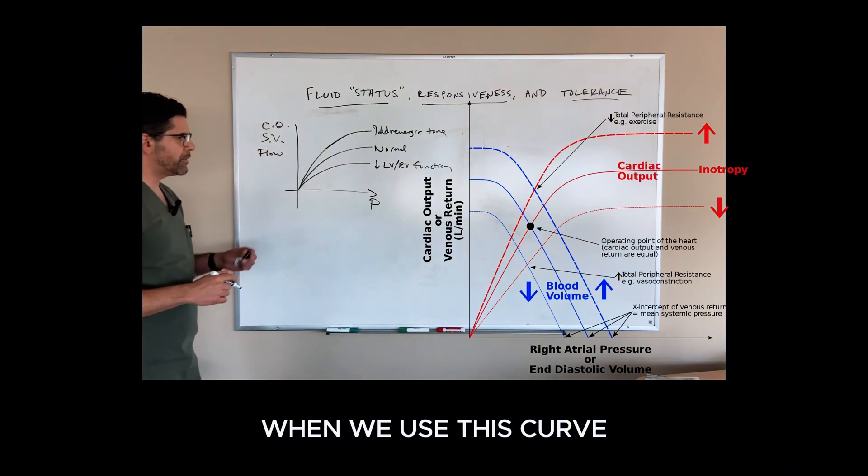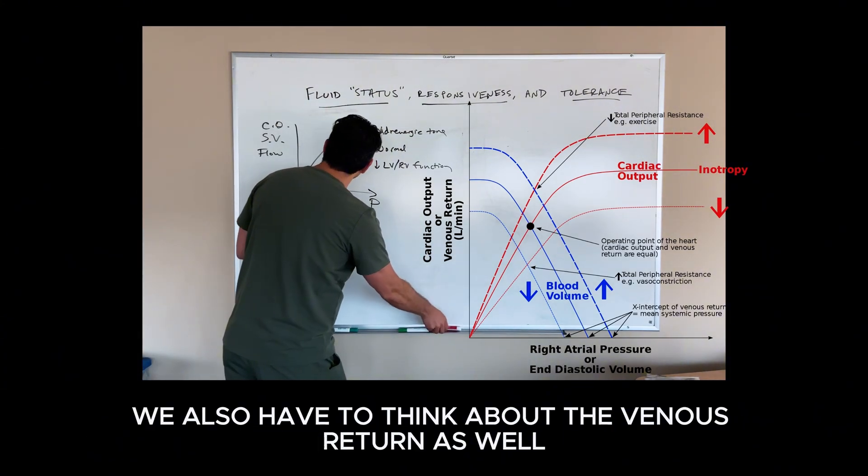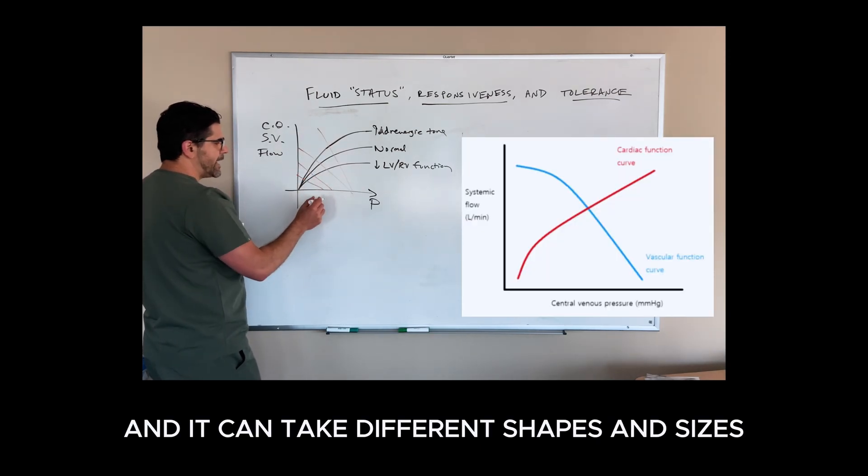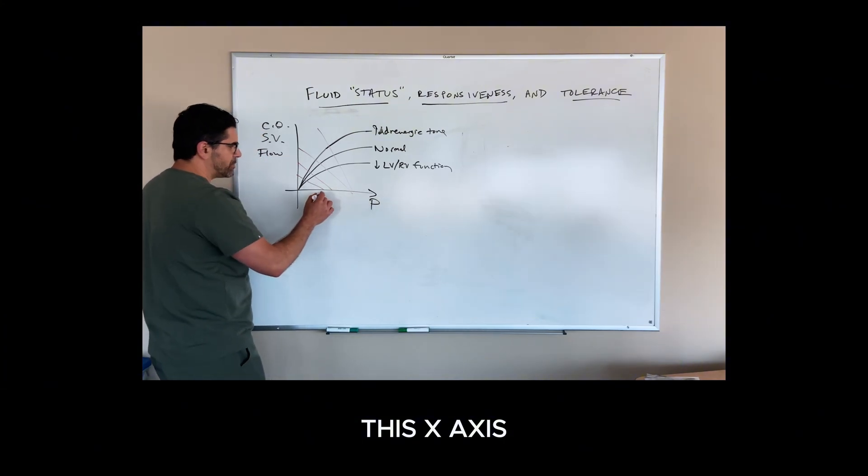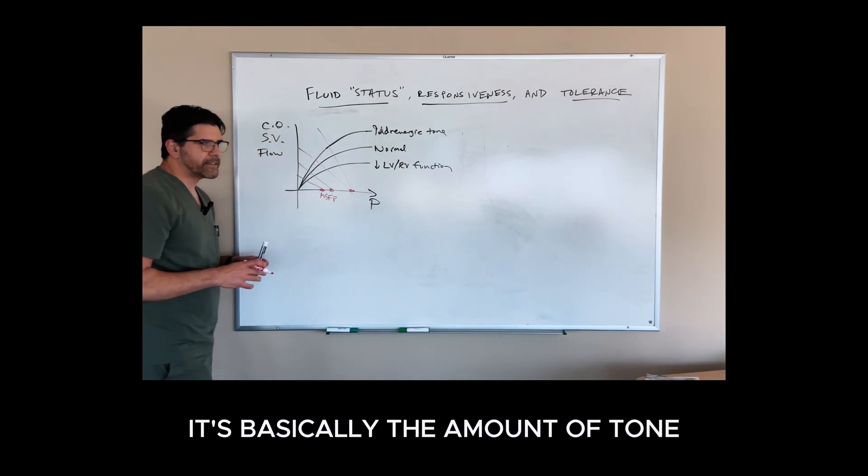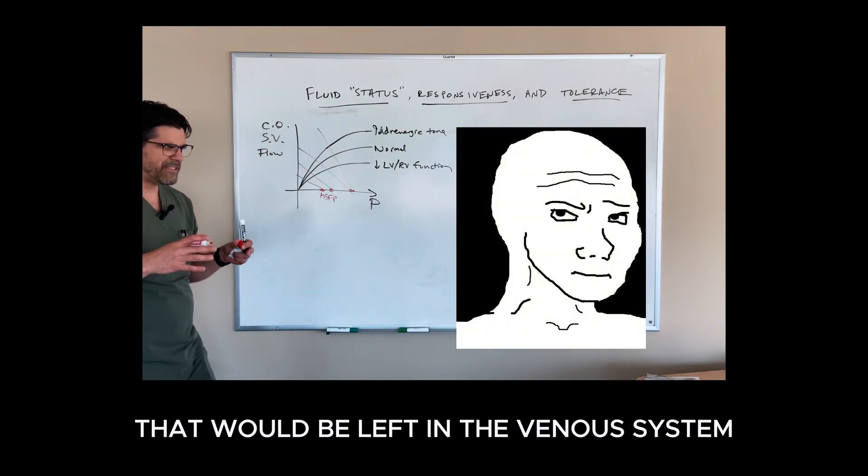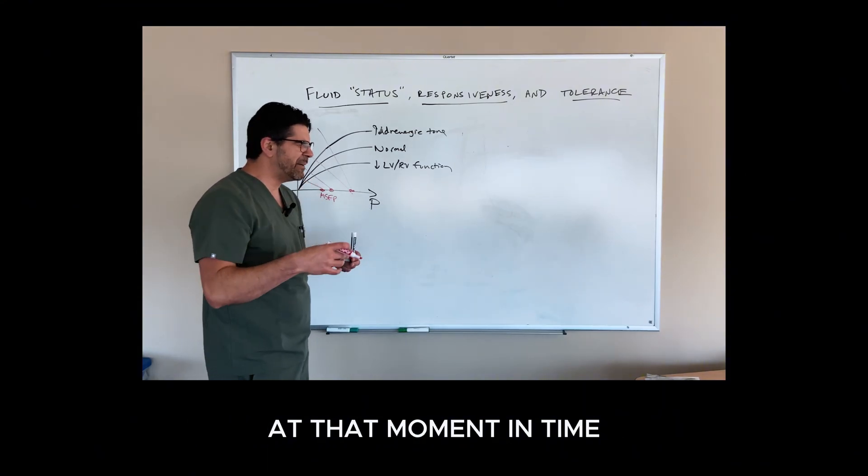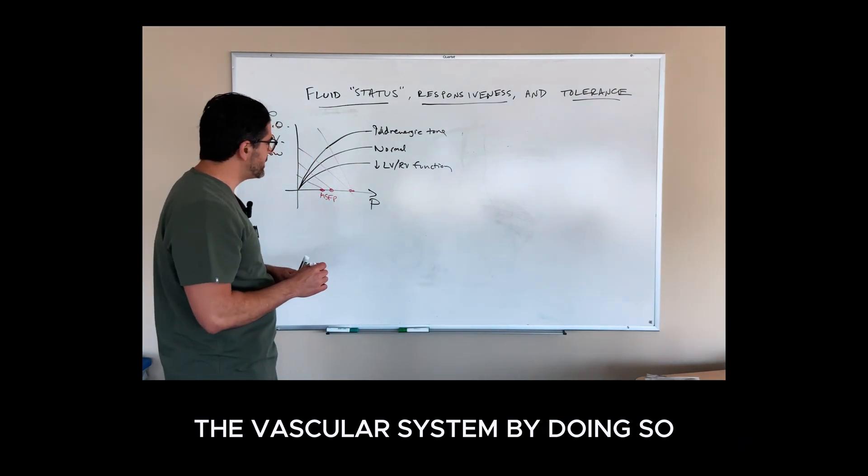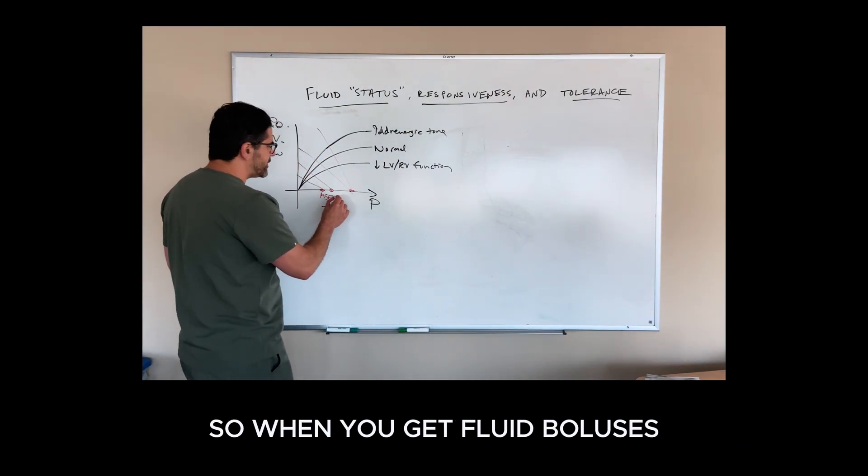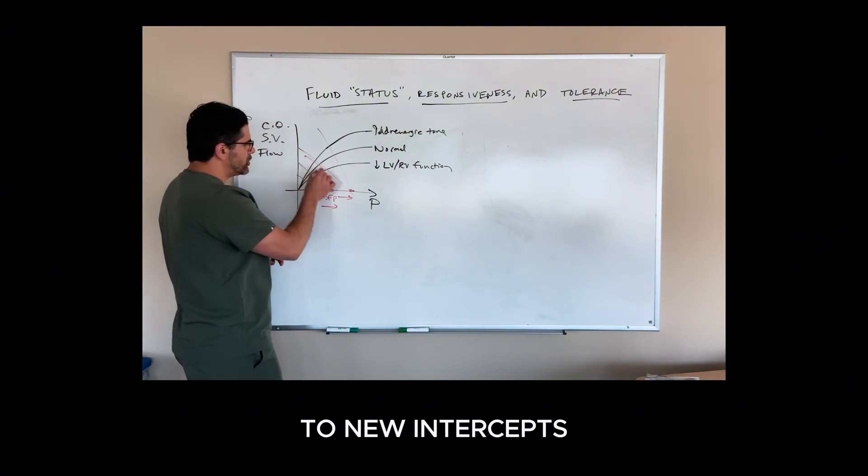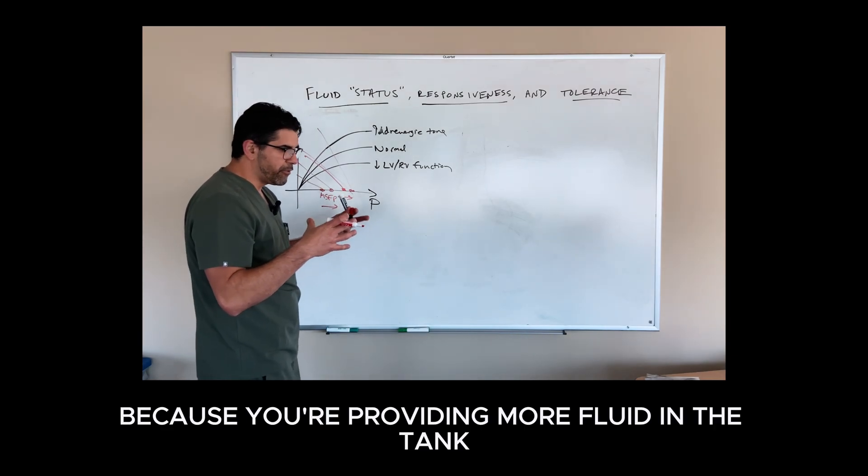When we talk about fluid responsiveness using this curve, we also have to think about the venous return, which is a separate curve and can take different shapes and sizes. This x-axis point is called the mean systemic filling pressure. It's basically the amount of pressure that would be left in the venous system if there were circulatory arrest at that moment in time. It's a simple way to think about just how much fluid is in the tank and how much pressure it's putting into the vascular system. When you give fluid boluses, you are continually scooting that venous return function along the x-axis to new intercepts because you're providing more fluid in the tank.